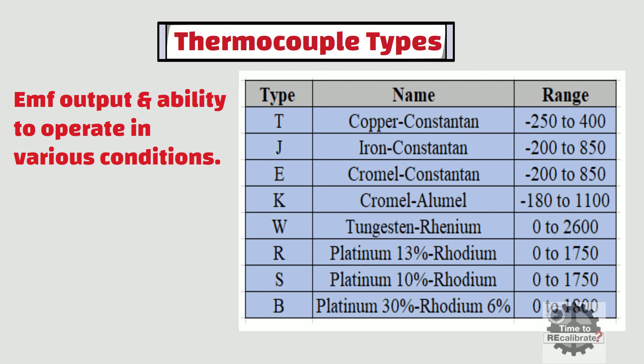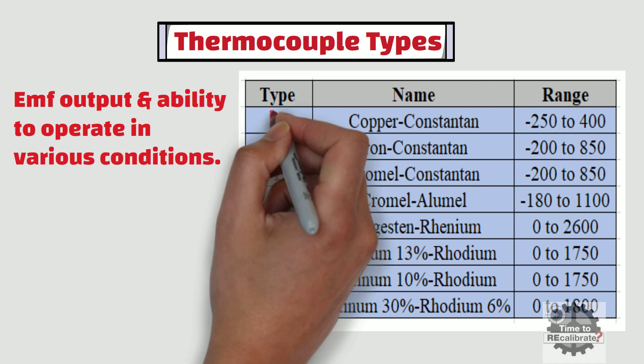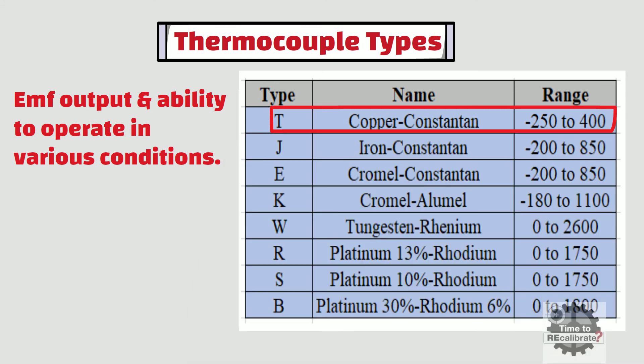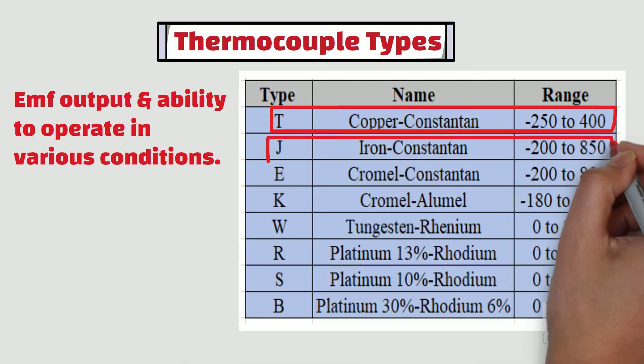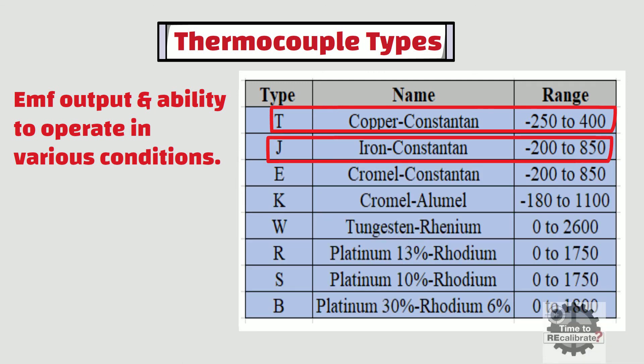As you can see from the chart, particular thermocouples are more suited to specific applications and temperature ranges than others. For example, type T thermocouple is used in applications down to 400 degrees Celsius. Similarly, the type J or iron and constantan thermocouple is the most widely used. It is used in applications down to 850 degrees Celsius.